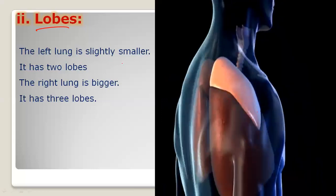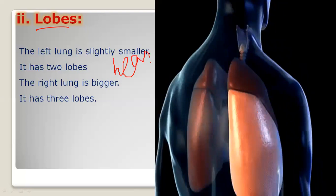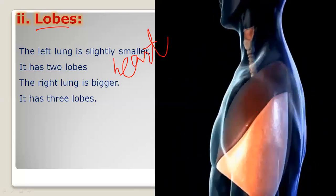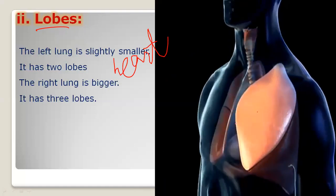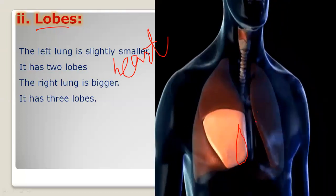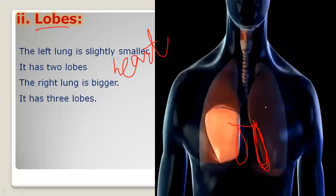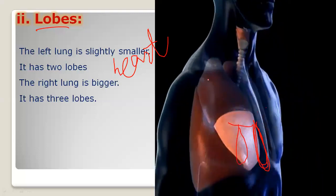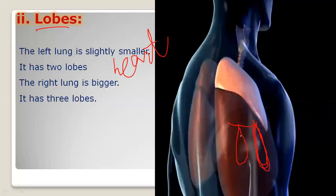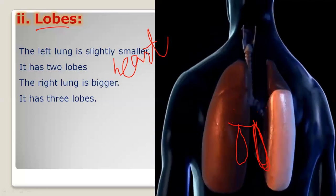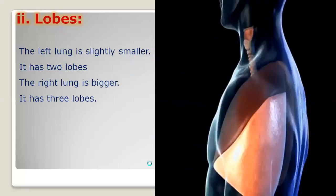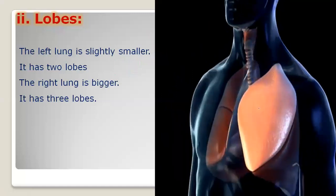The right lung has three lobes and the left lung has two lobes. That was a brief description about the structure and functions of the lungs.